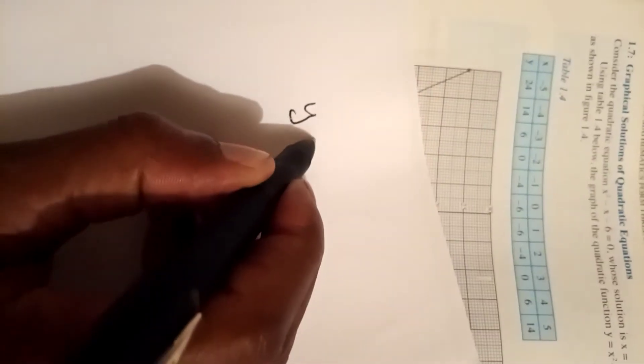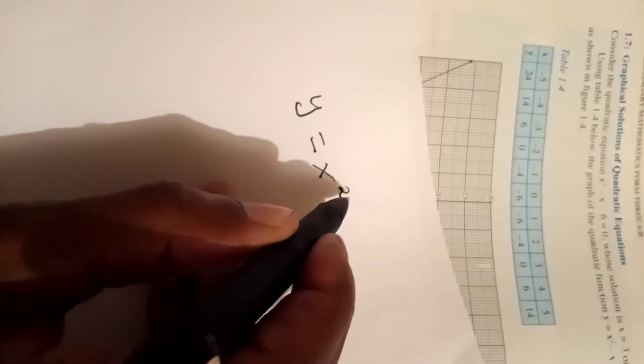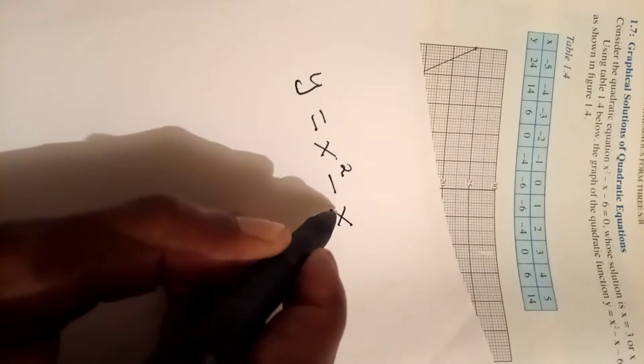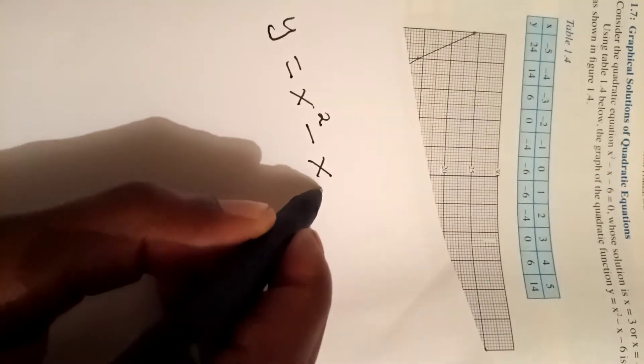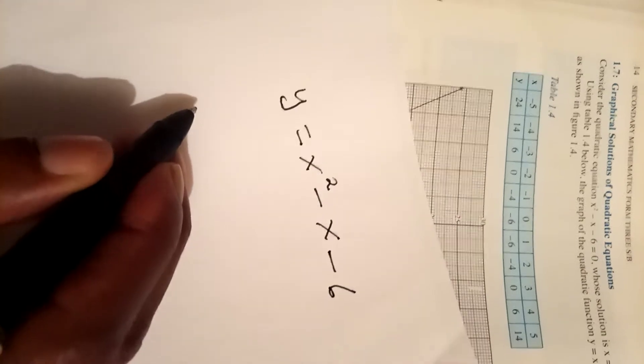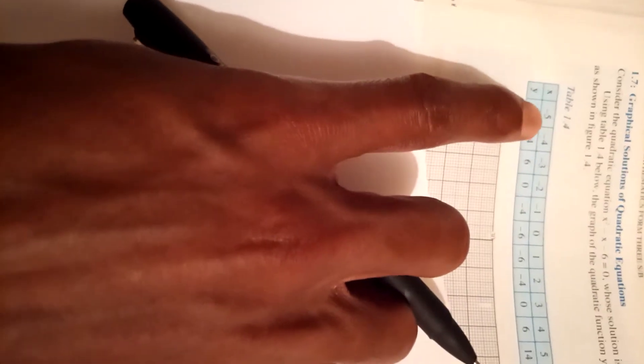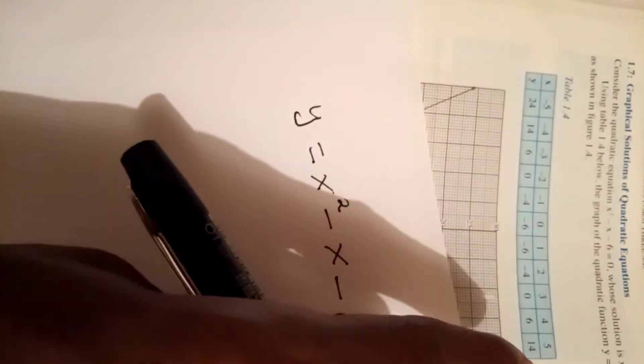So the function says y = x² - x - 6, and we are given x values ranging from negative 5 up to positive 5. So for each x value you have to look for the y value.